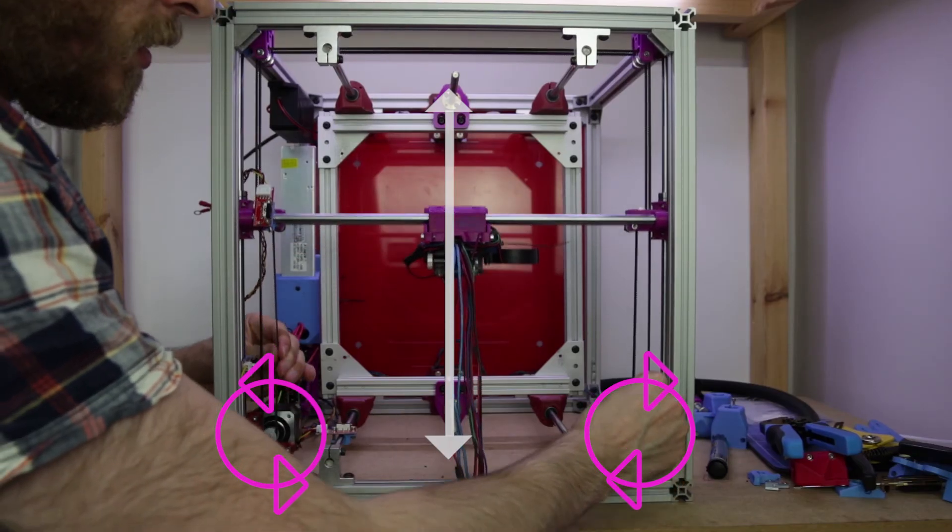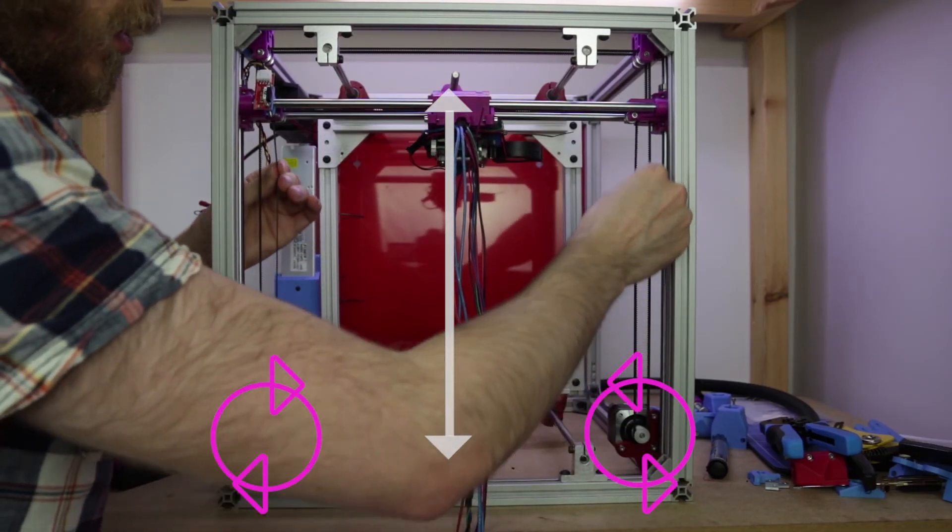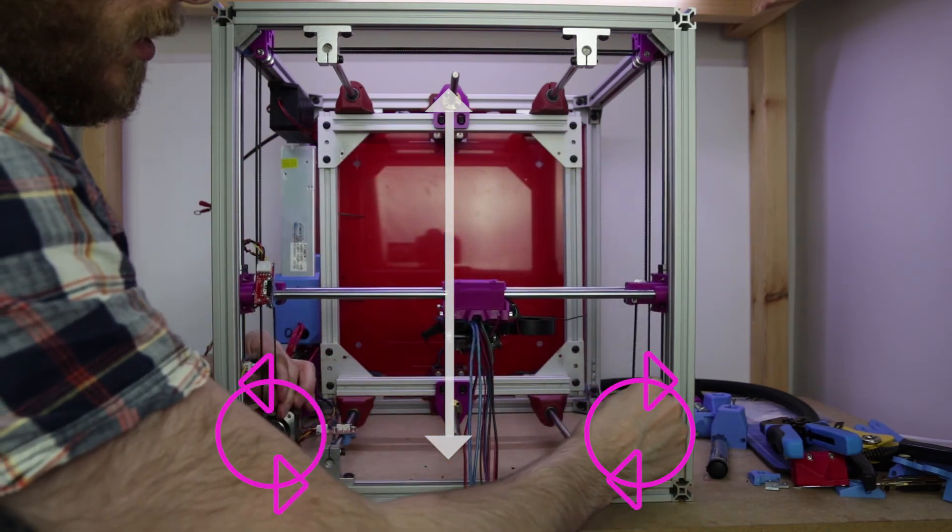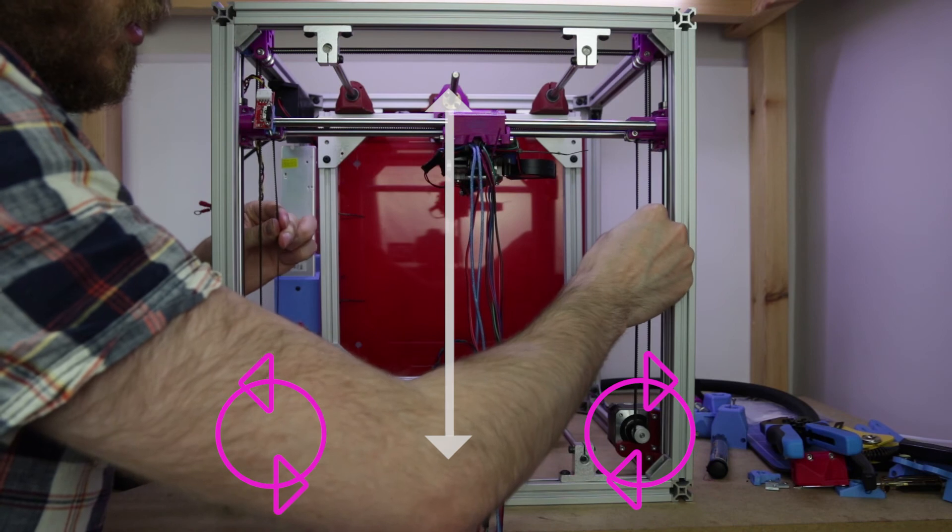And comparing this to the CoreXY printer, we can see, you guessed it, exactly the same thing. Rotating the motors in opposite directions gives you your forwards and backwards movement.